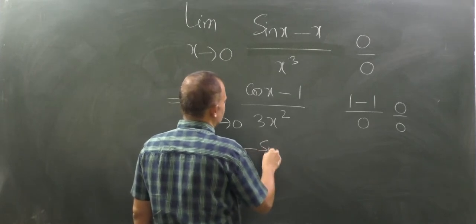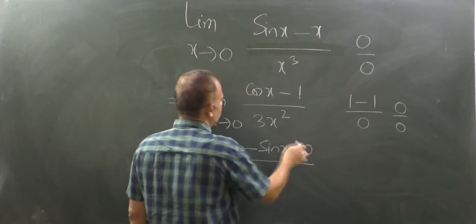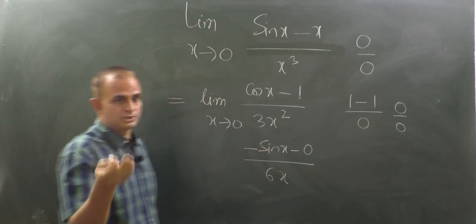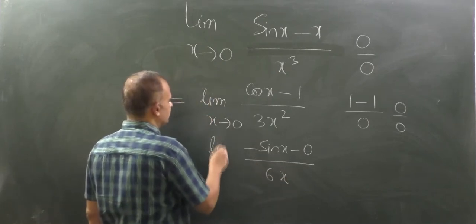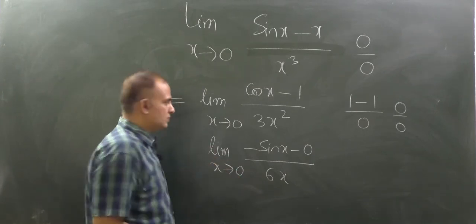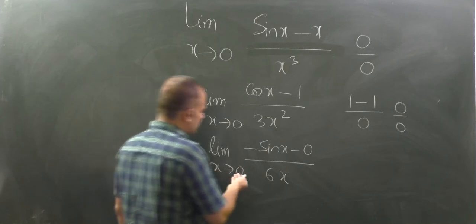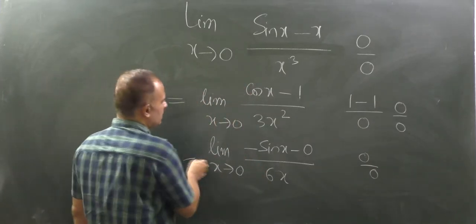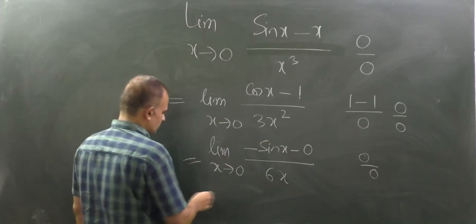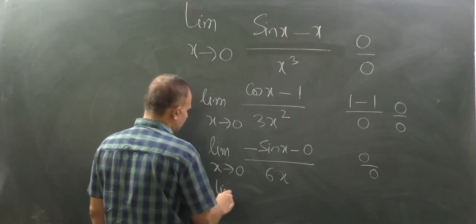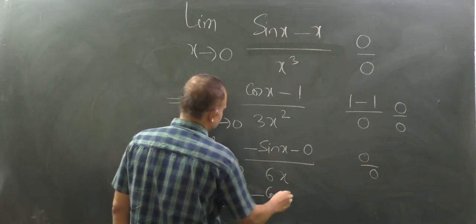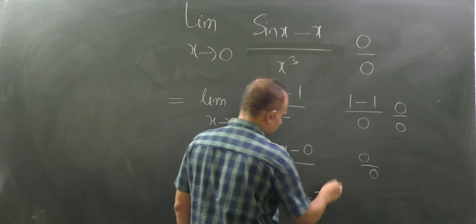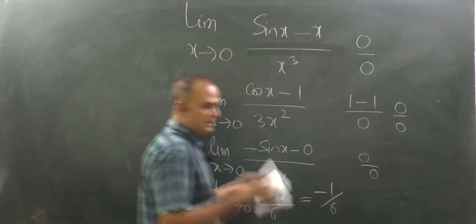Differentiating again: the numerator becomes minus sin x and the denominator becomes 6x. Since sin x over x tends to 1 as x → 0, this is still 0/0, so we apply L'Hôpital once more. Differentiating: minus sin x differentiates to minus cos x, and 6x differentiates to 6. Now putting x = 0: minus cos 0 over 6 = minus 1 over 6. So the limit is minus 1 by 6.